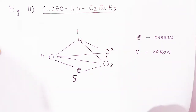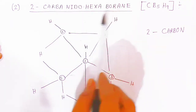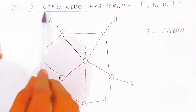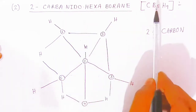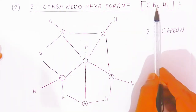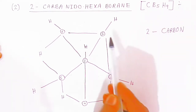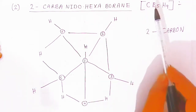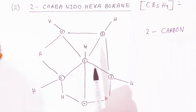The second example is 2-carbon nido hexaboron, meaning at position number 2 there will be a carbon atom — this is the nido hexaboron. The formula is CB5H9. At position 2 there is carbon, and there are five boron atoms and a total of nine hydrogen atoms. This is the structure of 2-carbon nido hexaboron.